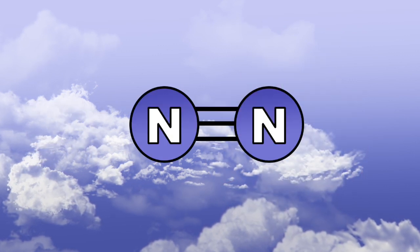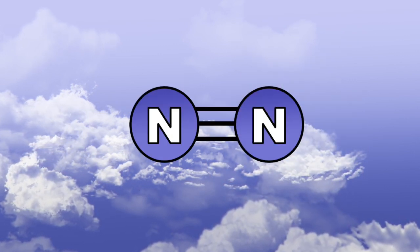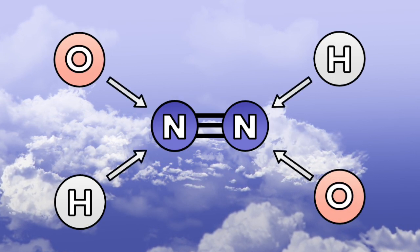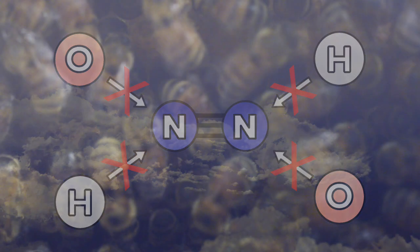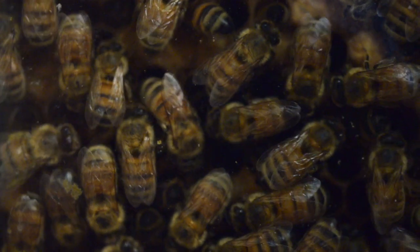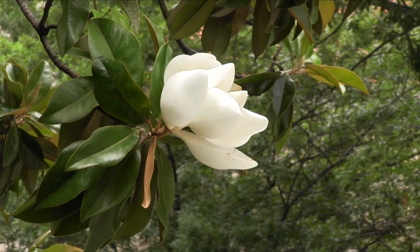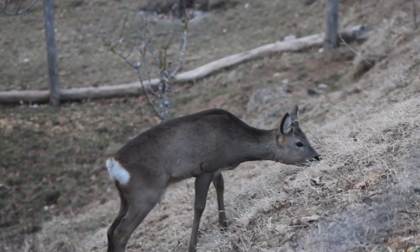Nitrogen gas, in its free form, has two atoms of nitrogen that are triple bonded and is inert, meaning in this state it will not react with other elements on its own. Although it is abundant, atmospheric nitrogen is stable and cannot be used by plants or animals.